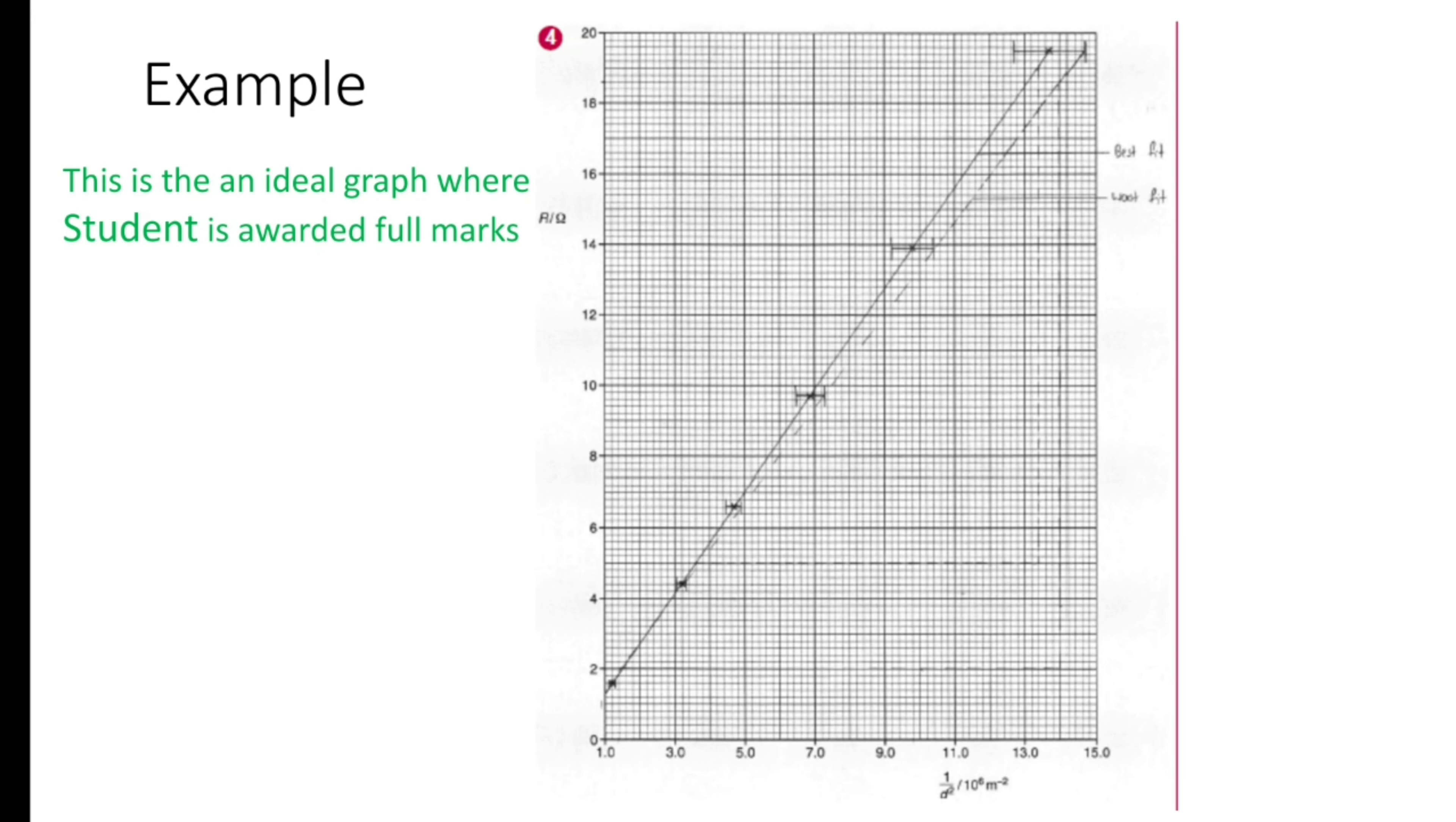This is the example of error bars. This is the example for a graph. This is an ideal graph where student is awarded full marks. Look at this graph carefully. Best fit line and worst fit line is labeled correctly.